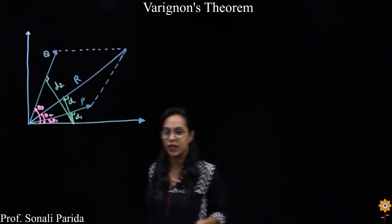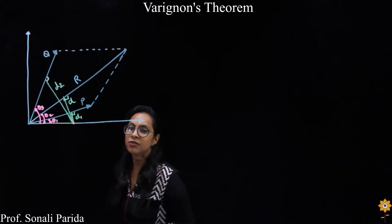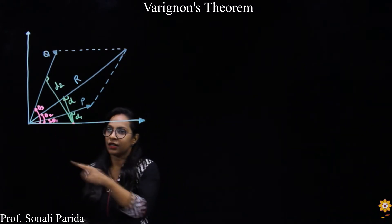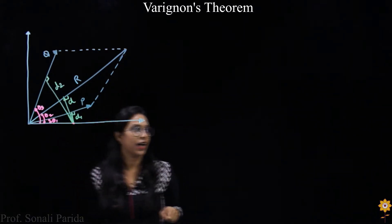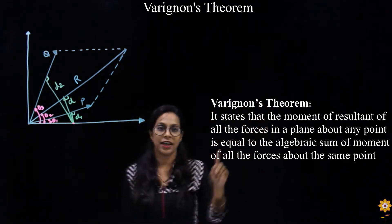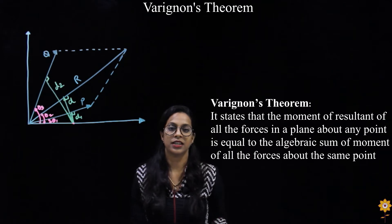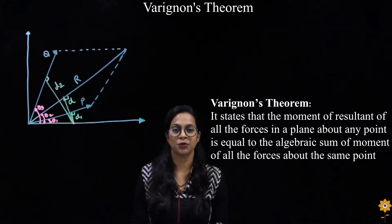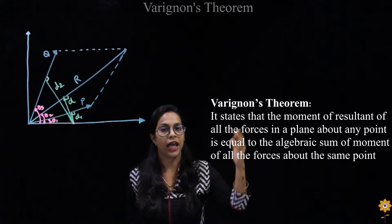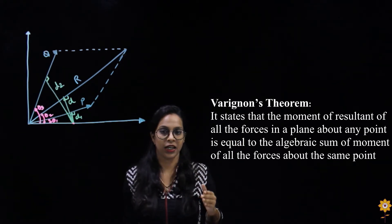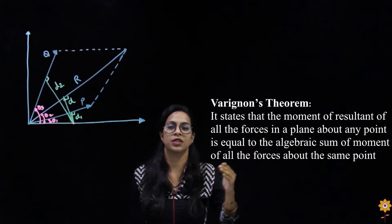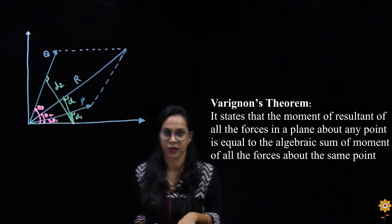But before we move on to that, we need to know what Varignon's theorem is. So this is the diagram for Varignon's theorem. The theorem states that the moment of the resultant force about any point in a plane is always equal to the algebraic sum of the moments of all the forces in the system about the same point.